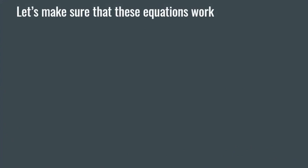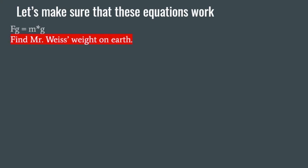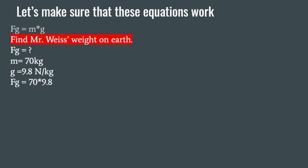Let's make sure these equations actually work. Let's do one the old-fashioned way. We have force gravity equals mass times gravity. I want to find my weight on Earth. Weight is Fg. My mass is 70 kilograms, and the gravitational pull of the Earth is 9.8 newtons per kilogram. We just take those two numbers and multiply them together, and we find out that my weight on Earth is 686 newtons.